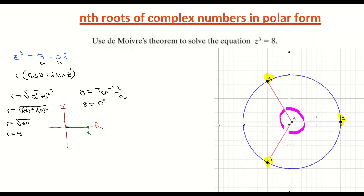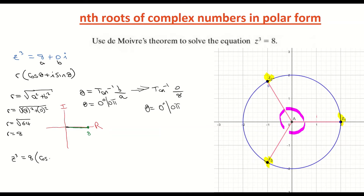Using the calculator: tan⁻¹(b/a) = tan⁻¹(0/8) = 0. So whether you sketch it or use the formula, θ = 0 degrees, which is the same as 0π radians. Filling in the polar form: z³ = 8(cos 0π + i sin 0π). There's our complex number in polar form.